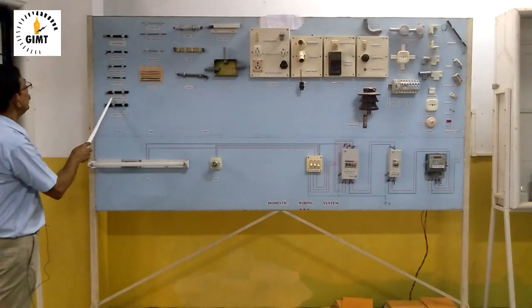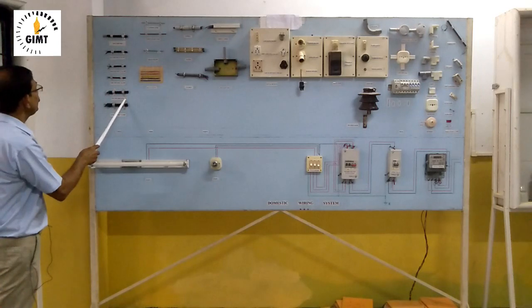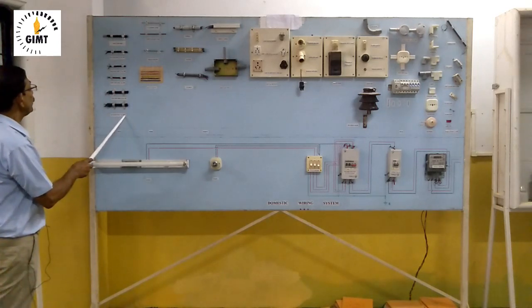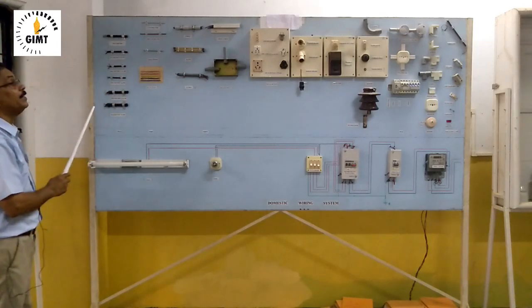And this is four-core cable, 2.5 square mm. And this is again, four-core cable, 4 square mm. But these two cables are metal braided.